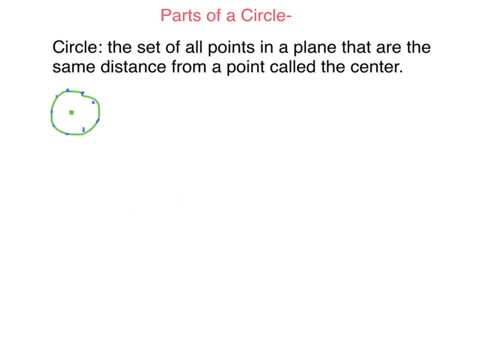So today we're going to be talking about circles. The definition of a circle is a set of all points that are the same distance from a point called the center. Here's the center of a circle, and here's a bunch of points around the outside — they're all the same distance away from that middle. That's the definition of a circle.